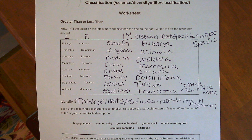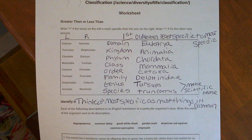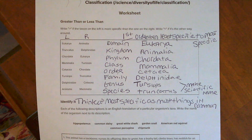So let's put domain down first, then kingdom, phylum, class, order, family, genus, and species.